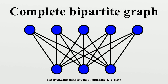Every complete bipartite graph K(n,n) is a Moore graph and a cage. The complete bipartite graphs K(n,n) and K(n,n+1) have the maximum possible number of edges among all triangle-free graphs with the same number of vertices — this is Mantel's theorem. Mantel's result was generalized to k-partite graphs and graphs that avoid larger cliques as subgraphs in Turán's theorem, and these two complete bipartite graphs are examples of Turán graphs, the extremal graphs for this more general problem.